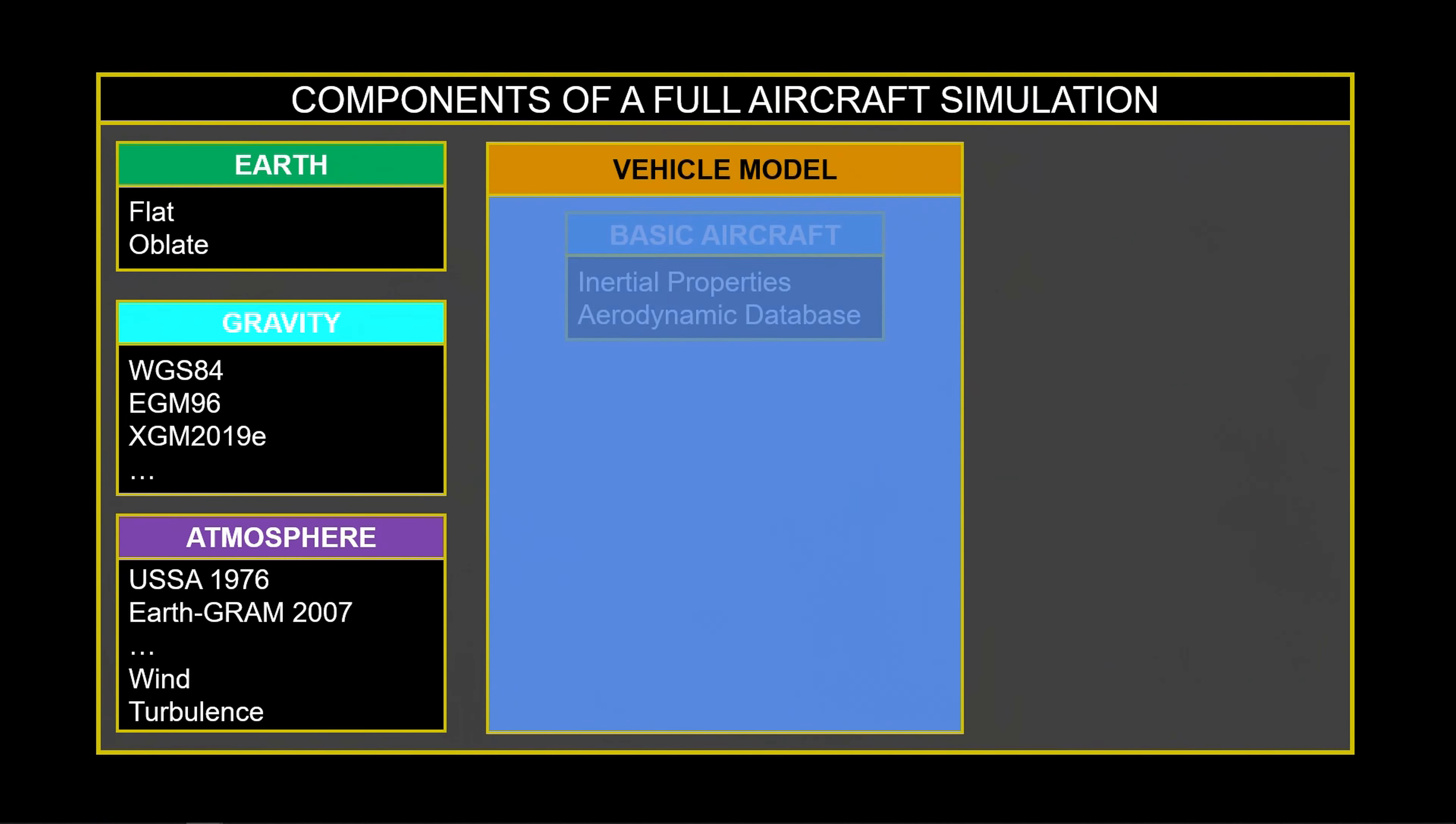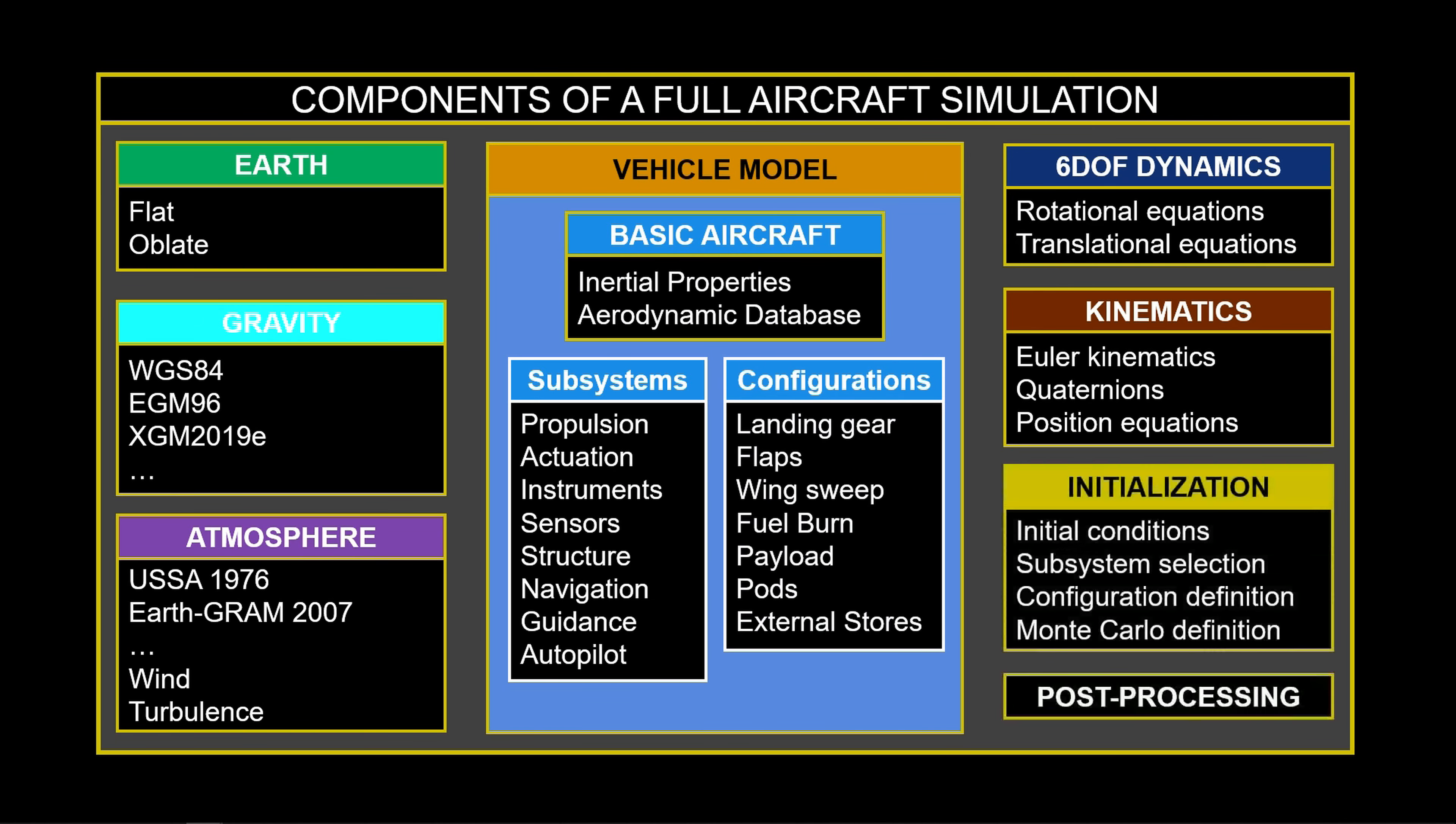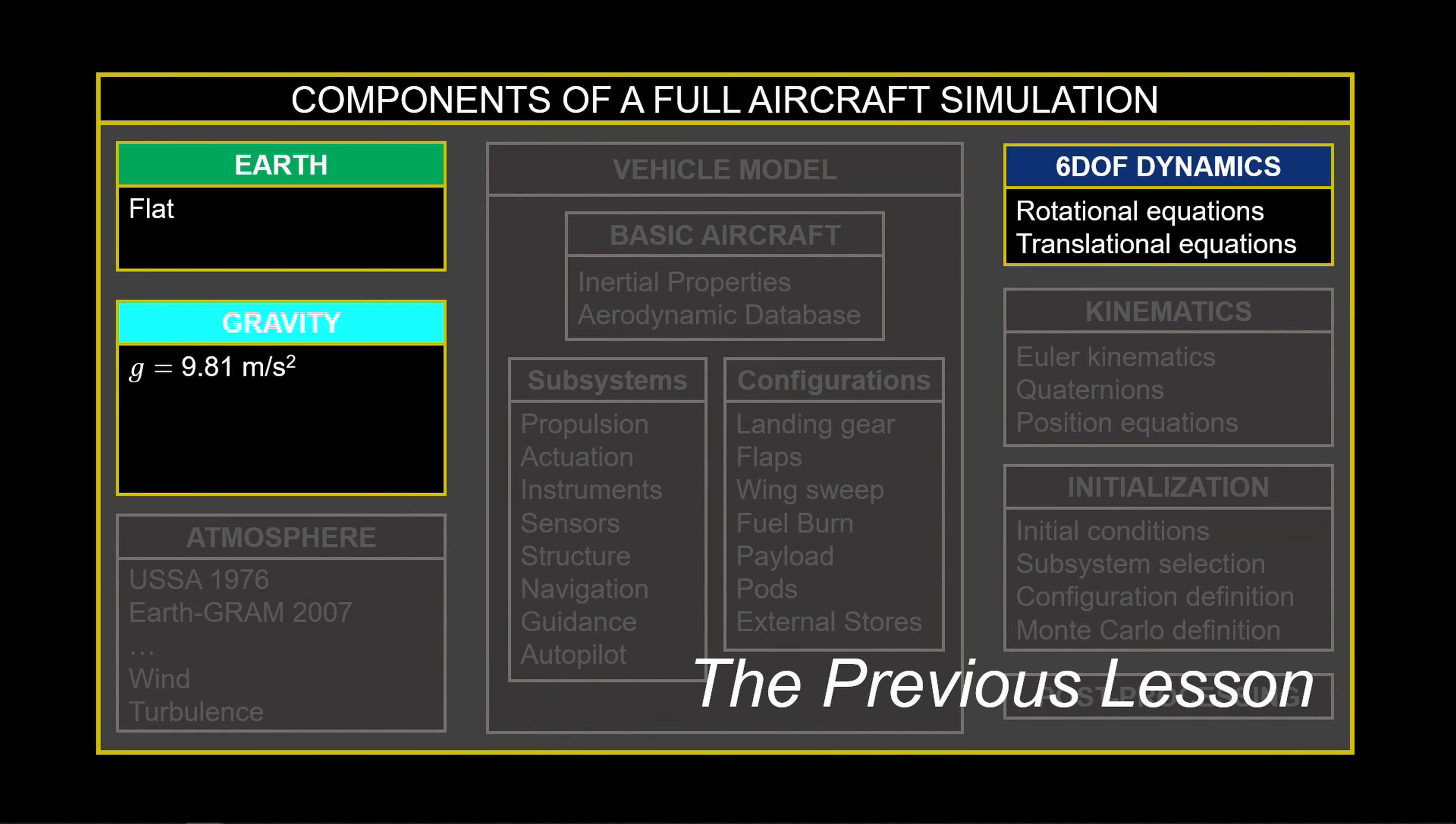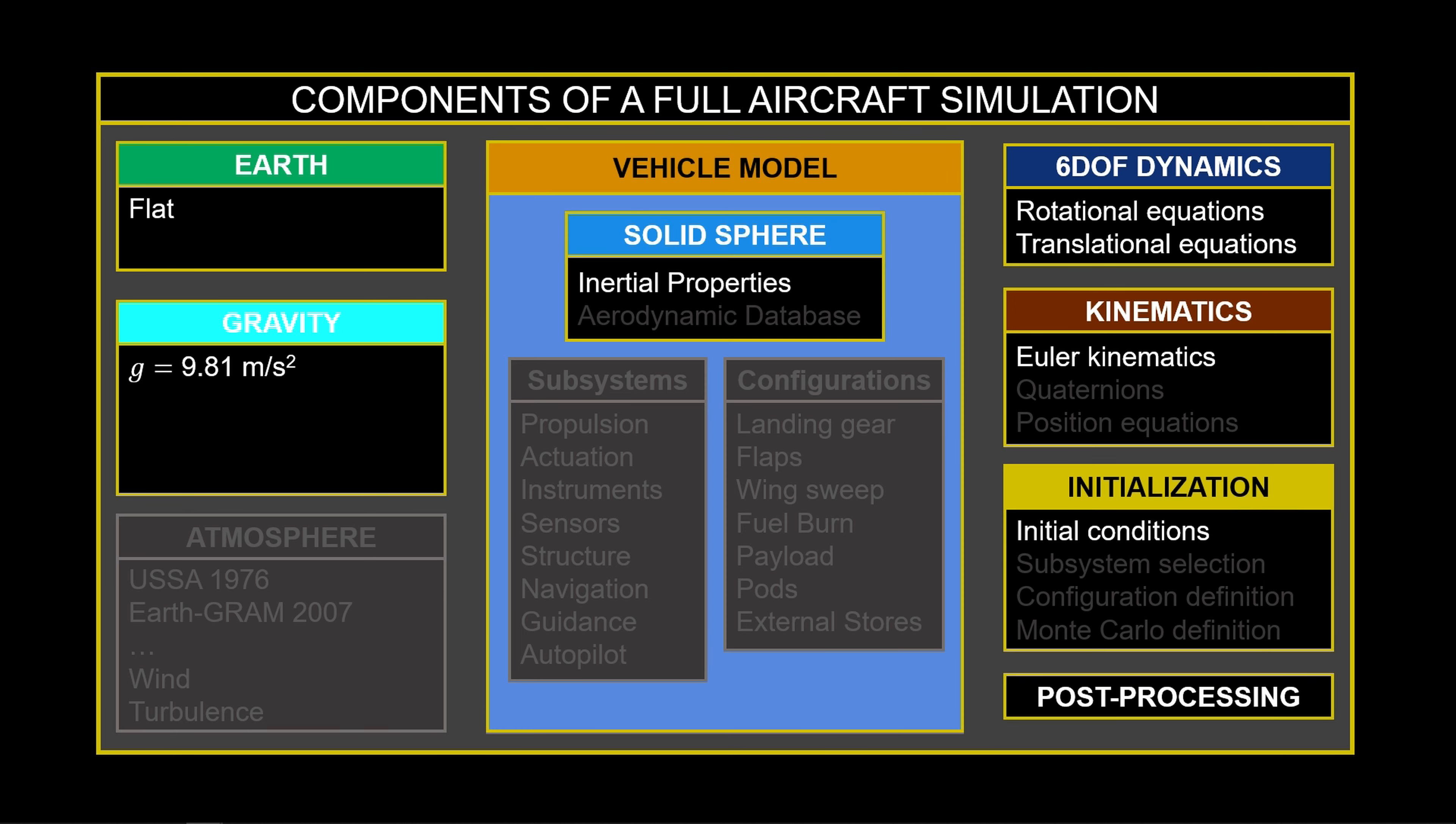Up to this point, we've introduced the primary components of a full aircraft simulation. In the last lecture, we covered the six-degree-of-freedom equations. Here, we include the Euler kinematic equations to describe aircraft attitude. We also create a simple sphere model and run the simulation for the first time.